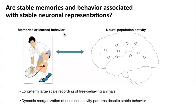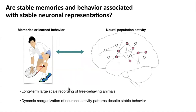Learning and memory requires the brain to establish an association between sensory stimulus and the neuronal population activity or representations. In the conventional view, long-term memories and stereotype behavior are associated with stable neural representations. However, more recent long-term recordings have shown that neural representations associated with stereotype behavior continually change over days and weeks — a phenomenon called representation drift.